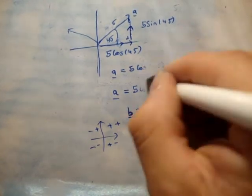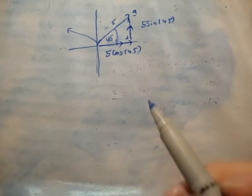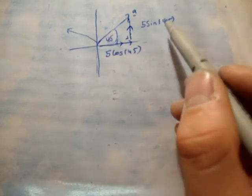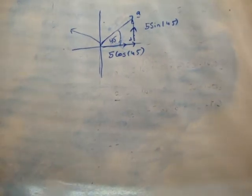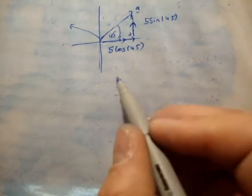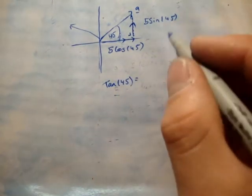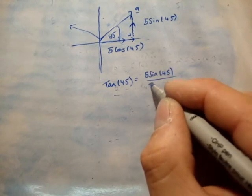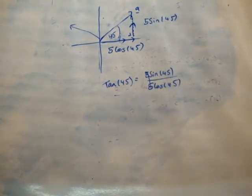The last thing about resolving vectors involves tan. You could say tan 45 equals opposite over adjacent, which is 5 sine 45 over 5 cos 45. The fives cancel, and sine over cosine is just tan anyway — which confirms the relationship.